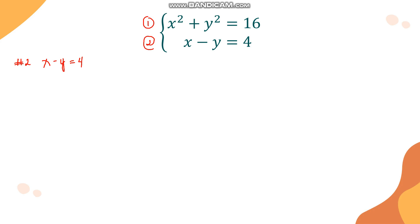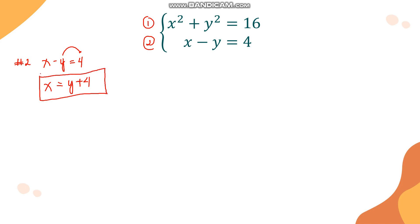To isolate x, we move negative y to the other side, giving x equals y plus 4. Using equation 2, we now have a temporary value for x which is y plus 4. Now that we have x equals y plus 4, we substitute it into the other equation.